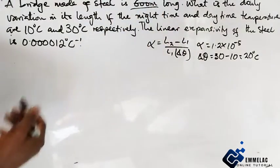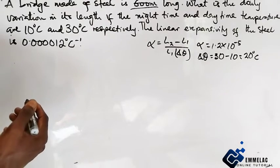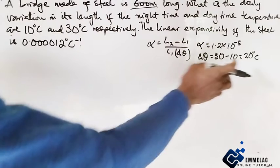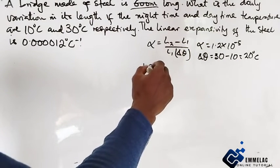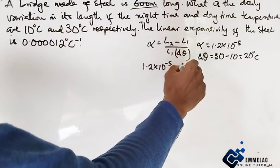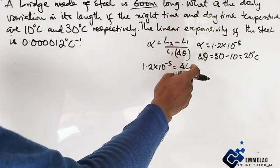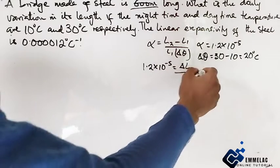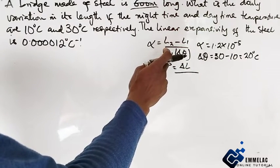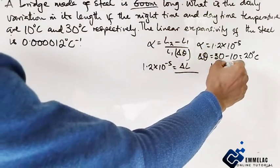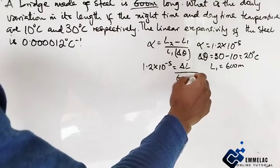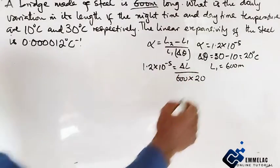Putting this into the equation, we have 1.2 × 10⁻⁵ = ΔL / (L₁ × ΔT). Our initial length L₁ is 600 meters, so we have 1.2 × 10⁻⁵ = ΔL / (600 × 20).